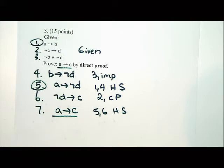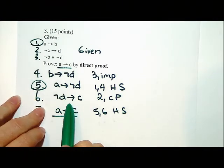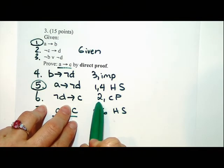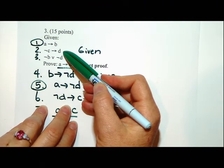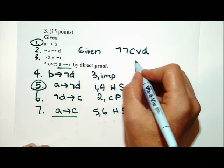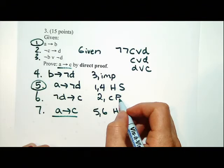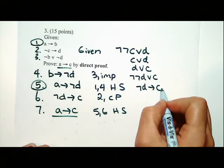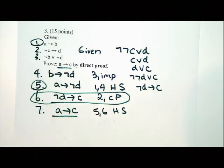Now I've got A implies not D, but I have to use it with line two via hypothetical syllogism. But not D doesn't match with the hypothesis of the implication, so I use contrapositive. We get not D implies C from line two and contrapositive. Then five and six with hypothetical syllogism gives A implies C, which is what I wanted to prove. The contrapositive works by reversing the implication and negating both sides — it's a little like multiplying both sides of an inequality by a negative number and flopping the operator.